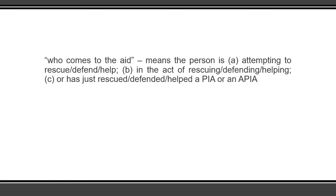What does the phrase 'who comes to the aid of a person in authority or his agent' mean? The phrase simply means that the person is attempting to rescue, attempting to defend, or attempting to help — or is in the act of rescuing, defending, or helping — or has just rescued, defended, or helped a person in authority or an agent of a person in authority. This must be the situation obtaining at the time the assault is made on such a person.